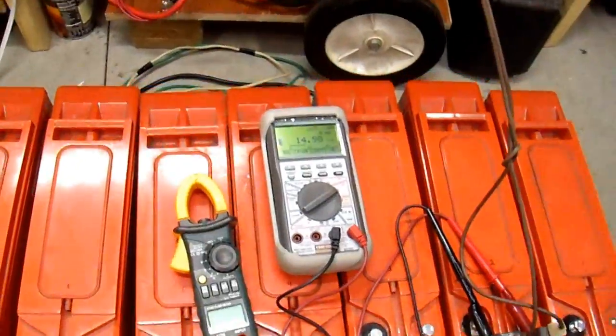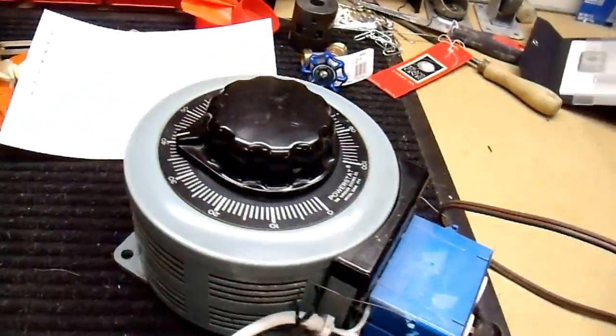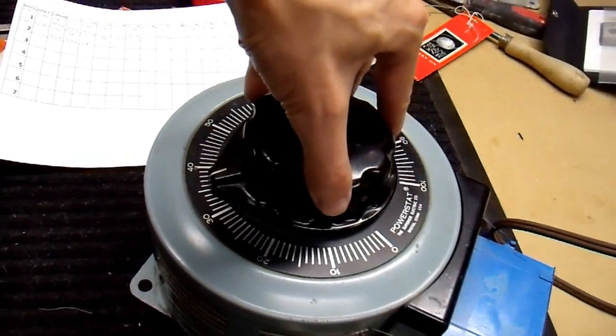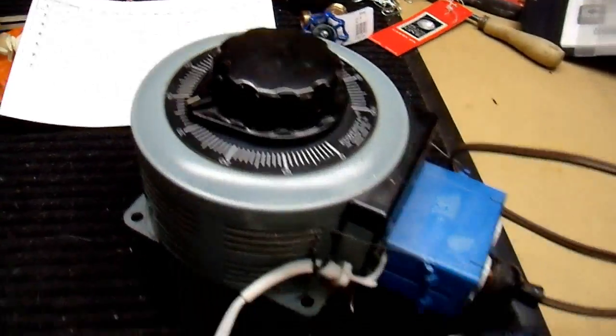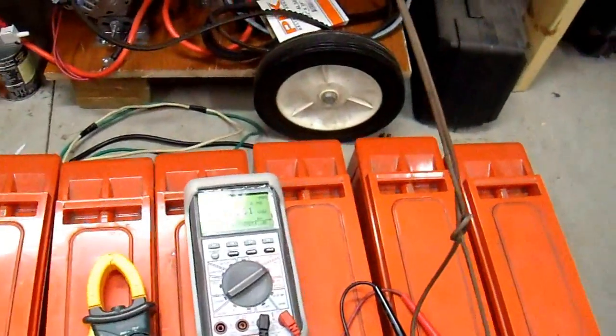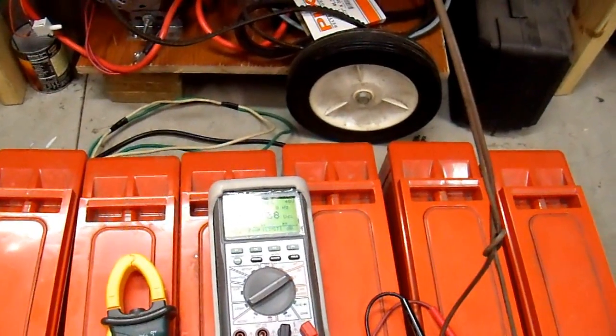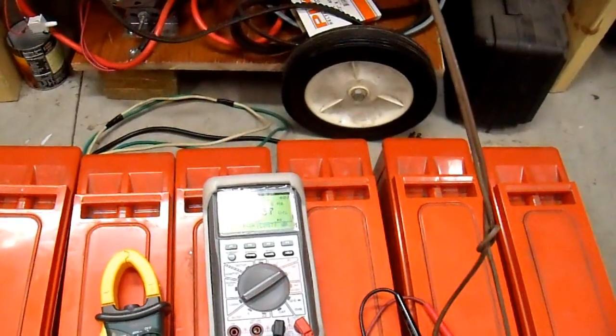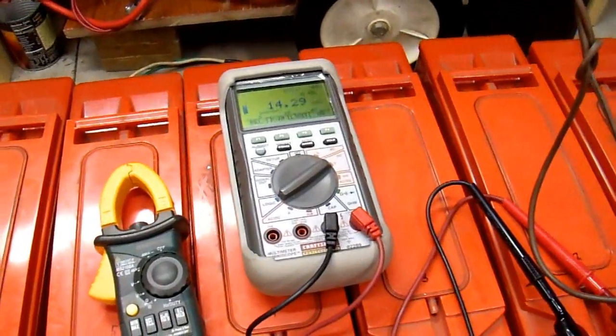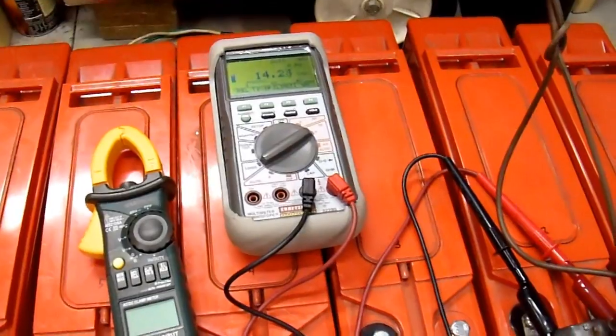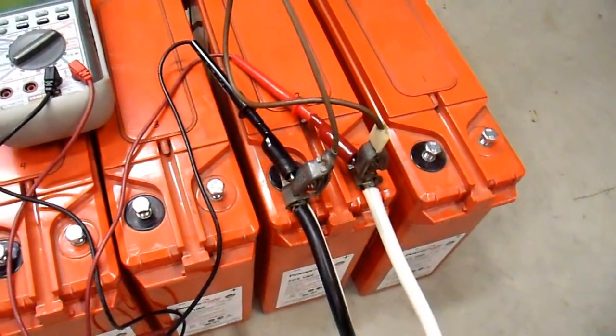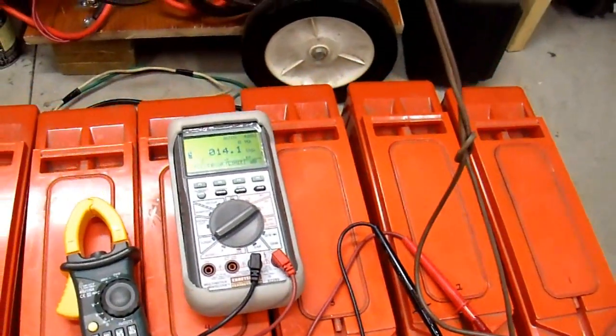I have my charger connected up through this variable auto transformer, so I'm just gonna crank this down a little bit and watch my output voltage droop down. Now batteries like this do have a very very slow response rate in terms of their chemical makeup. It will take quite a bit of time for this voltage to settle down.